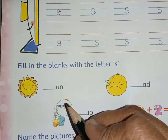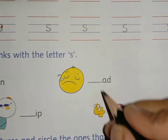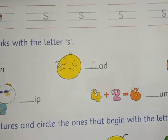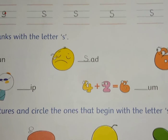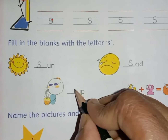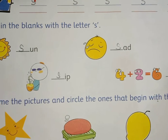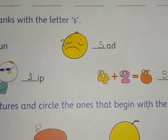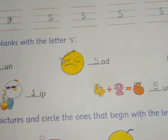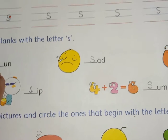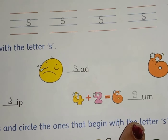These fill in the blanks with the letter S. This is sun — S for sun. S for sad. S for six. S for sip. This is S for some. So say once again with me: S for sun, S for sad, S for six, S for sip, S for some.